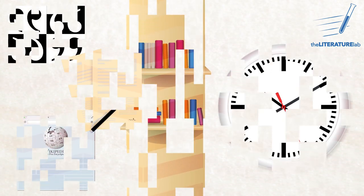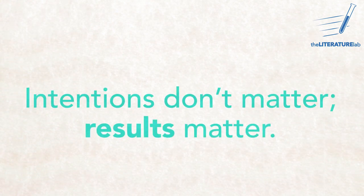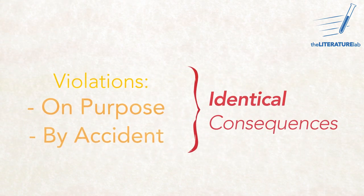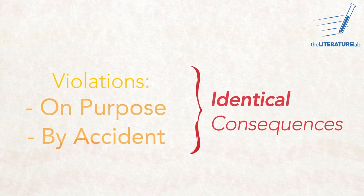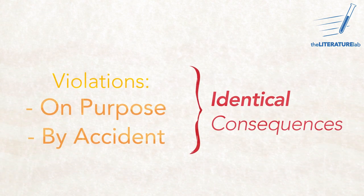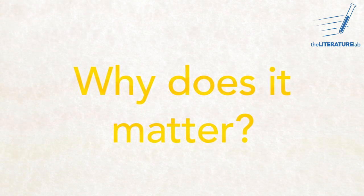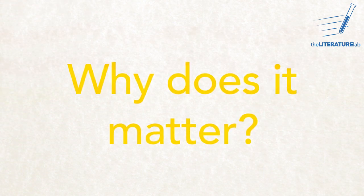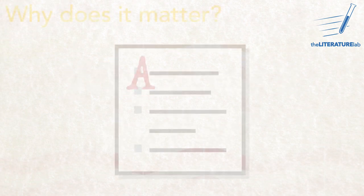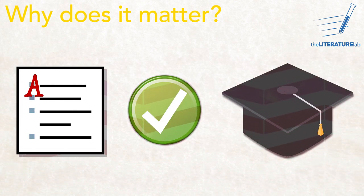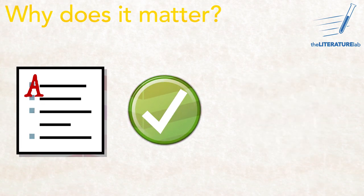But here's the problem: intentions don't matter — results matter. Whether you're violating academic integrity on purpose or by accident, the consequences are identical. They vary from a failing grade on the assignment or in the course, to a suspension, to an expulsion. Much depends on your record and your institutional policies, as well as the extent of your breach. Why does it matter? Because if anyone's getting paid for that song, it should be Rihanna, not you. Similarly, if you're getting credit for writing an essay, passing a course, and getting a degree, that essay has to be your work — or you don't deserve credit for it.